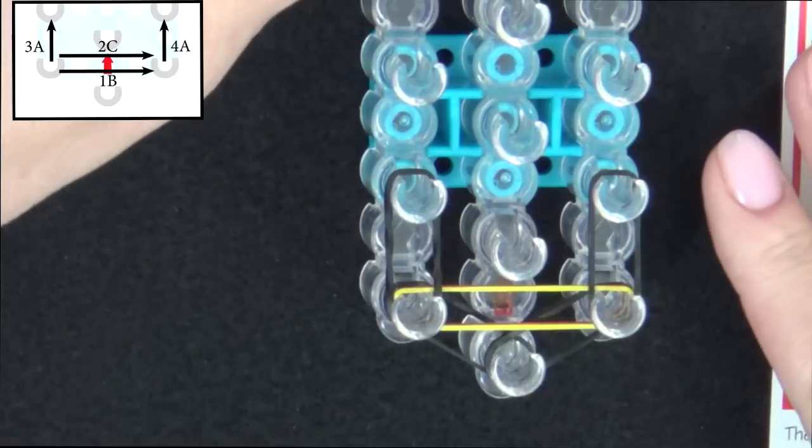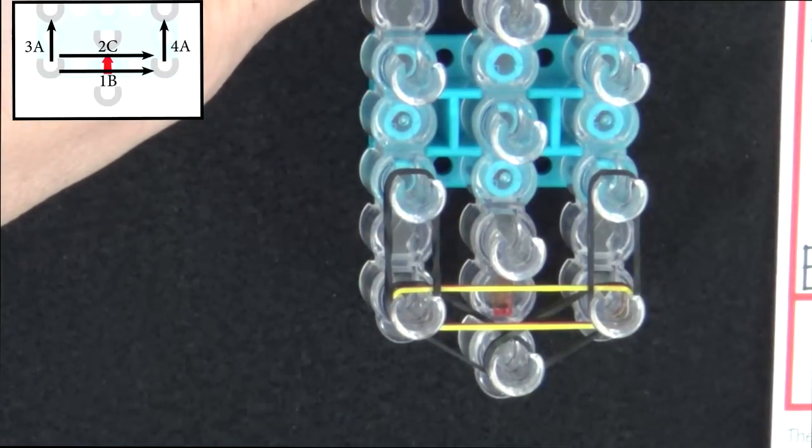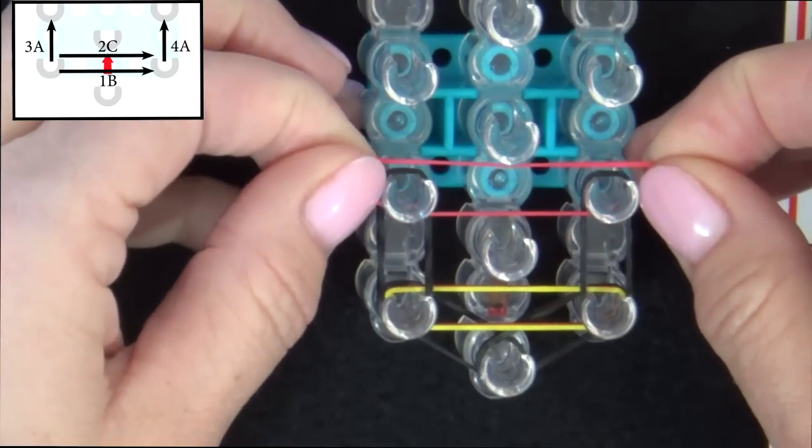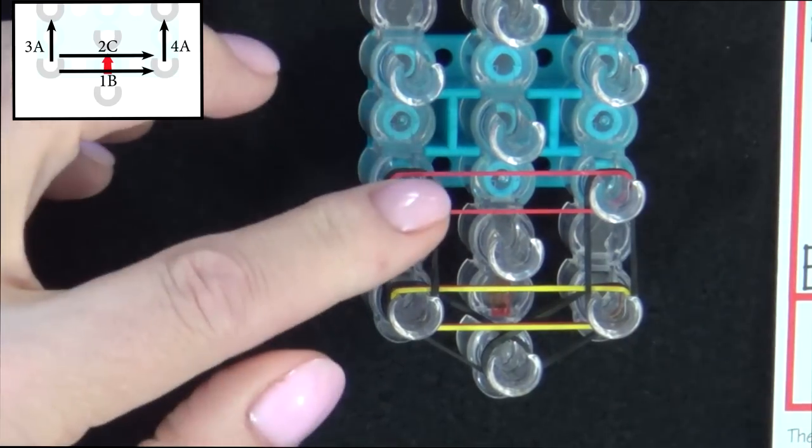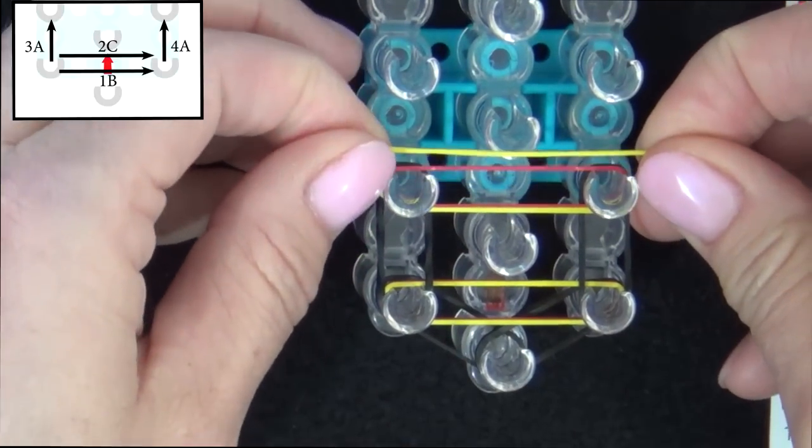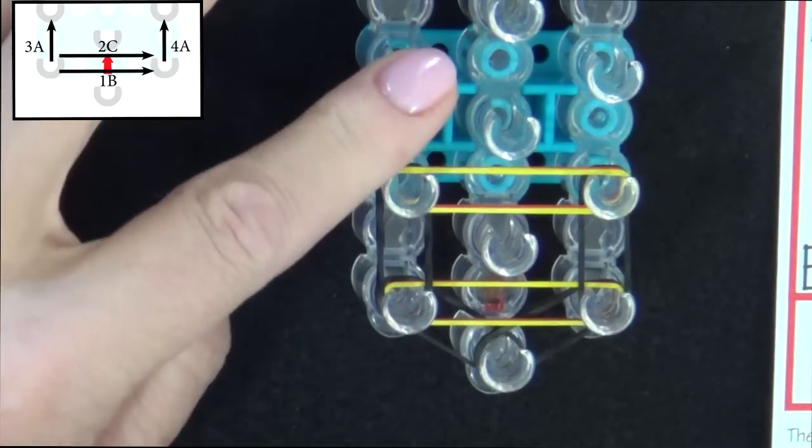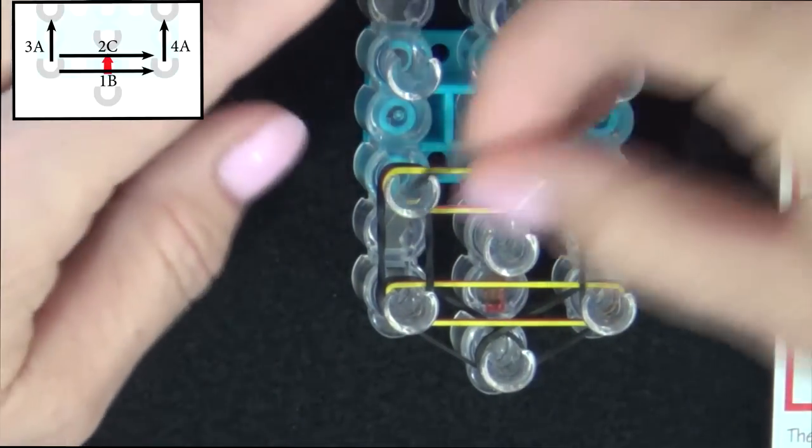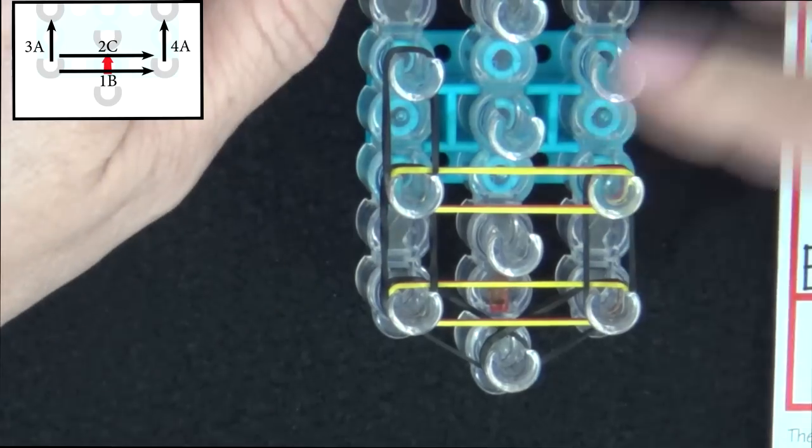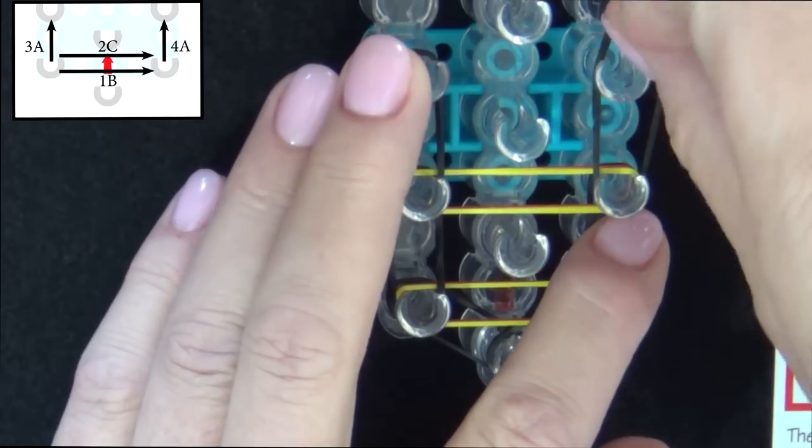Now we'll continue this one through four pattern to the end of the loom. I'll show you one more time and then we'll fast forward. We place our B band going straight across. Just above that for step two, we'll place our C band. Three will be another A band going up the left side. And we'll do that again on the right side. That's number four.